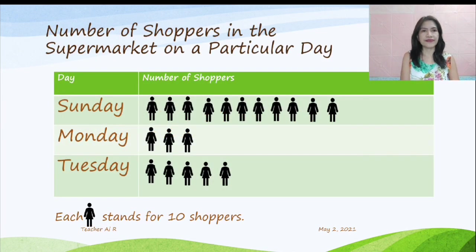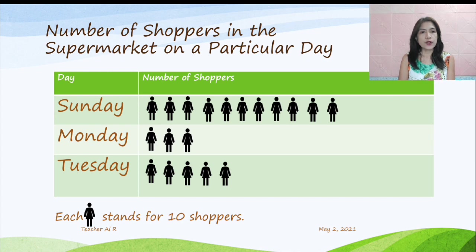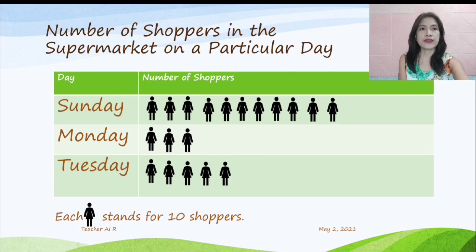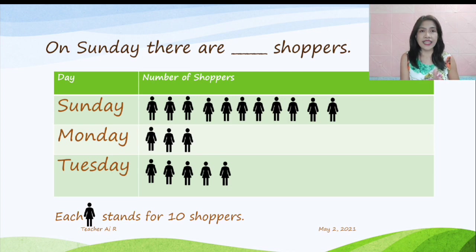So, we have here some examples. We have here the number of shoppers in the supermarket on a particular day. We have there the days Sunday, Monday, and Tuesday, and we have the number of shoppers shown in pictures. Let's look down first at the legend. Each girl stands for 10 shoppers, meaning each picture stands for 10 shoppers. Here are the questions. On Sunday, there are blank shoppers. How many shoppers are there on Sunday? We are going to do skip counting by 10 on the pictures for the day of Sunday.